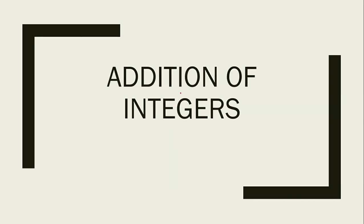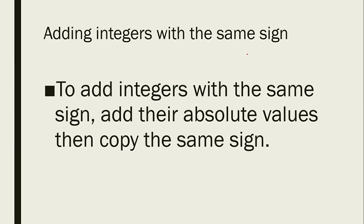Let's start off with adding integers — specifically, adding integers with the same sign. To add them, we just need to add their absolute values and then copy the same sign. From the previous lesson, we discussed what absolute values mean — this is the distance from zero. Therefore, our absolute values are always positive. So assuming the numbers are positive, just add them and then copy the same sign.